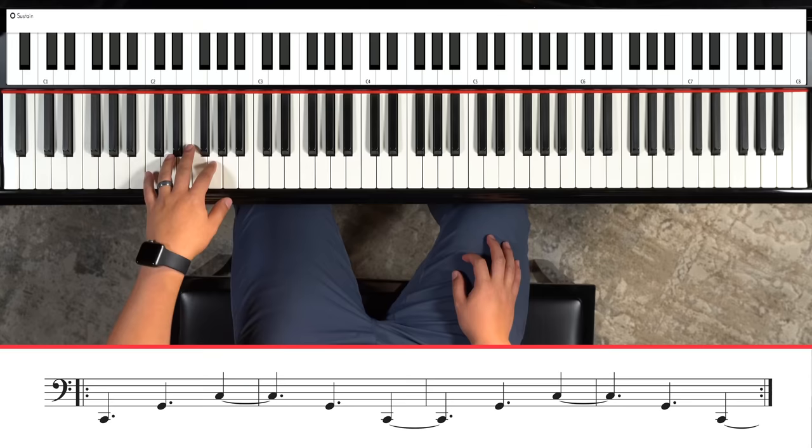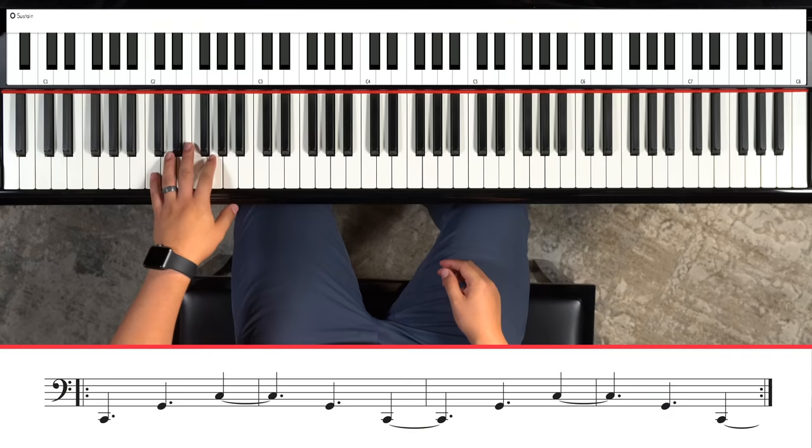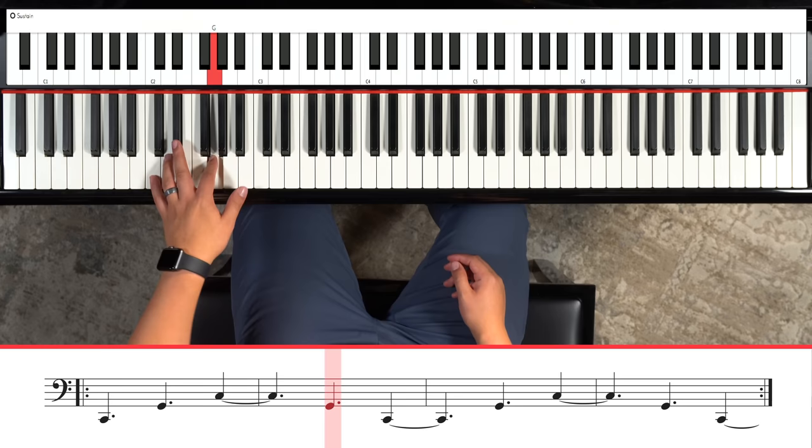Starting off, you're going to start on beat one. One and two and three and four and. So we're really targeting beat one, the end of two and beat four. After that first measure though, it's just going to keep on flowing and you're not really going to hit beat one anymore. You're just going to hit the end of two and four. So let's just hear what that sounds like. One and two and three and four.